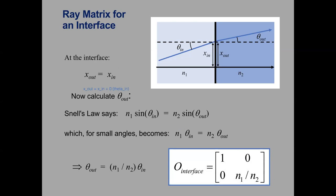If we wanted to predict what happens starting with the light ray here and ending over there, we would multiply by a free space matrix, then the interface matrix, then another free space matrix. Free space itself is represented by a matrix, so you can't forget to include those matrices. I'll leave that to you as extra practice.